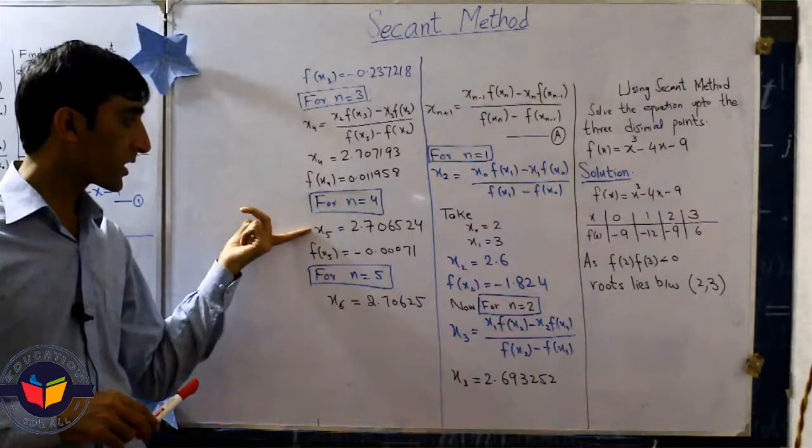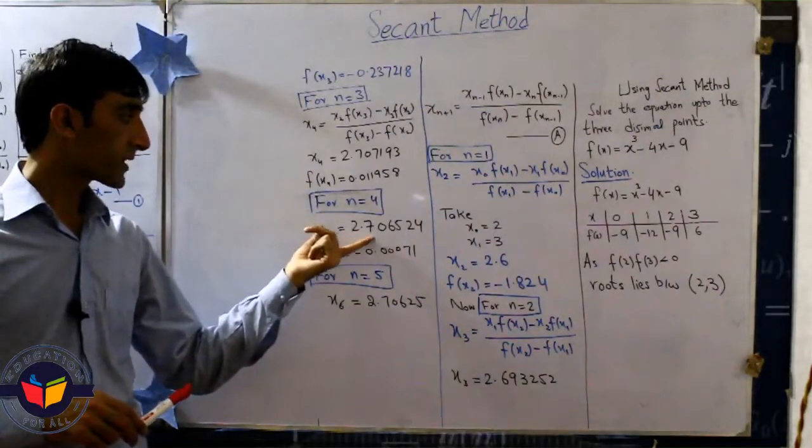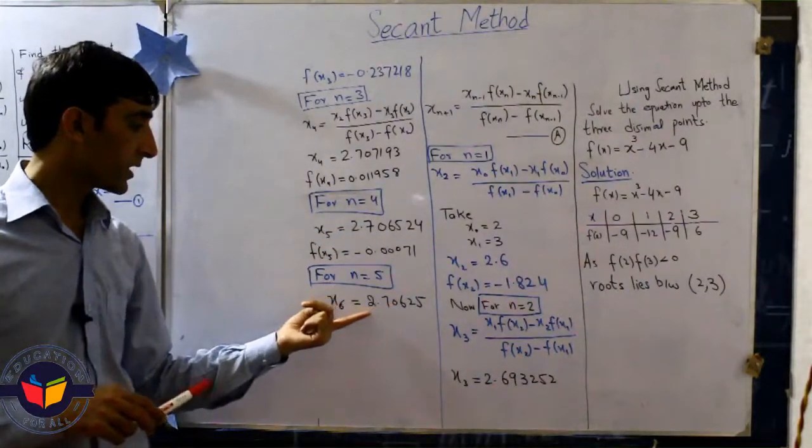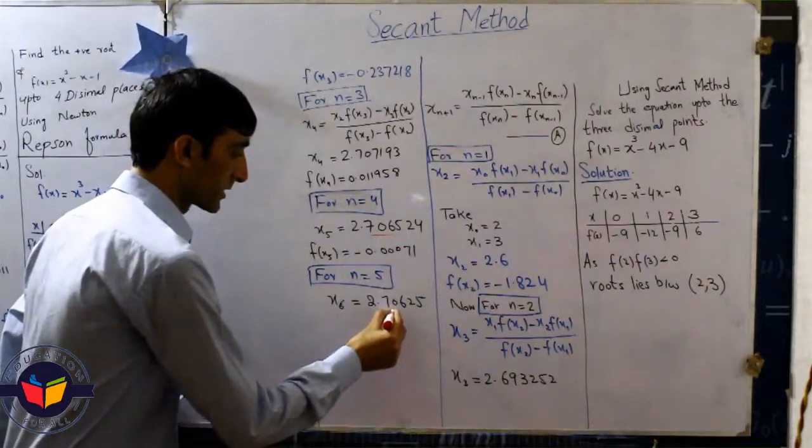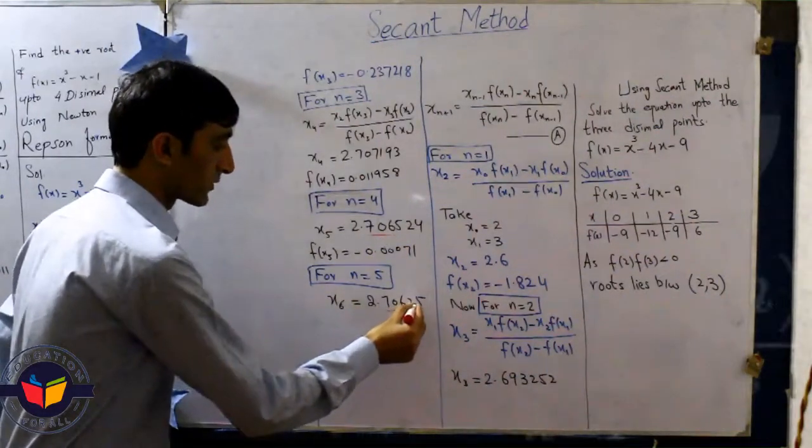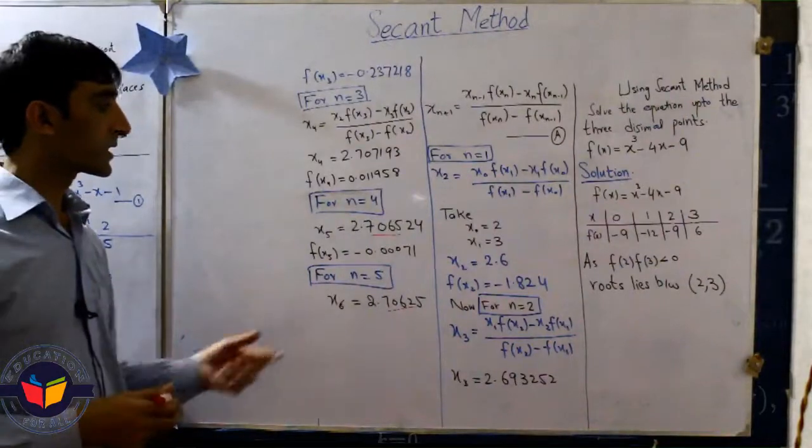In x5 the result is 2.70654 and in x6 it's also 2.706... Now these 3 digits are matched. Sorry, 4 digits are matched. We need only 3 digits.